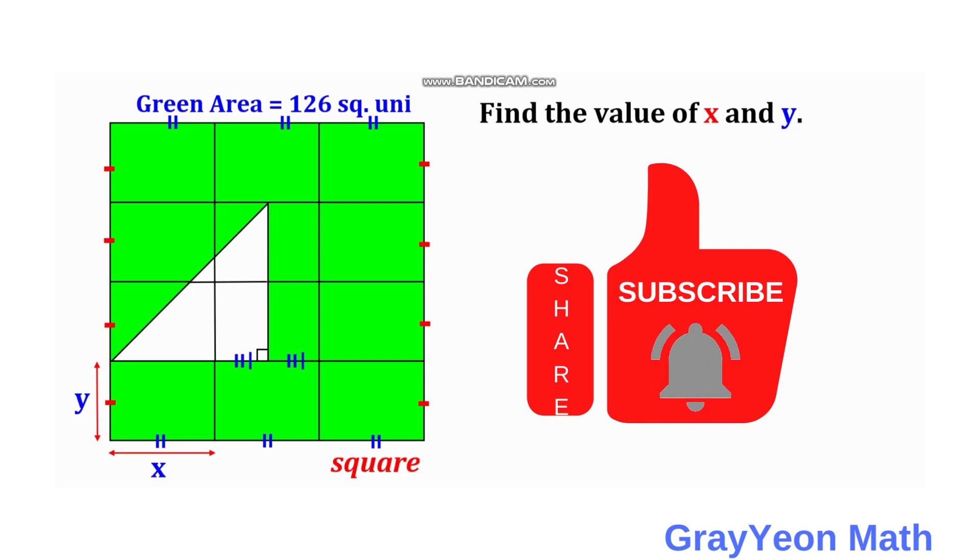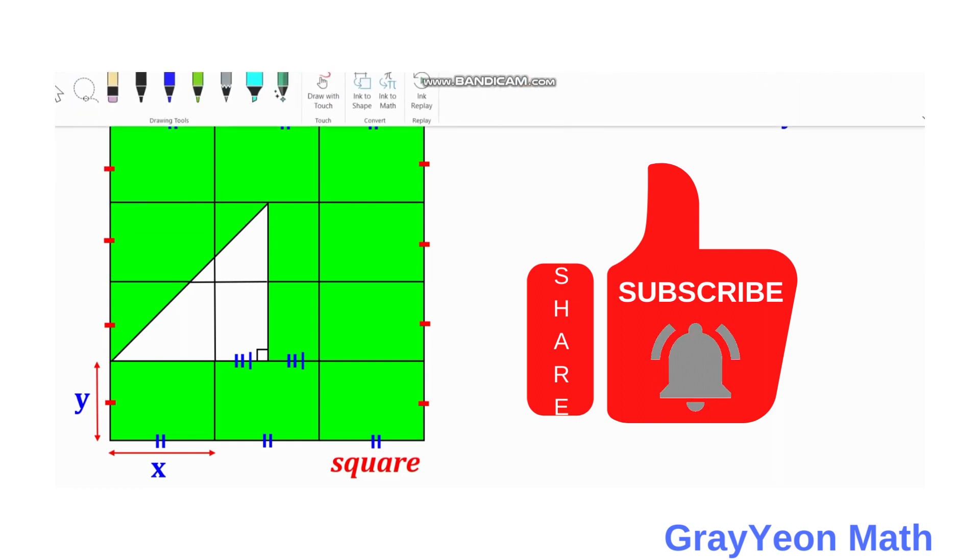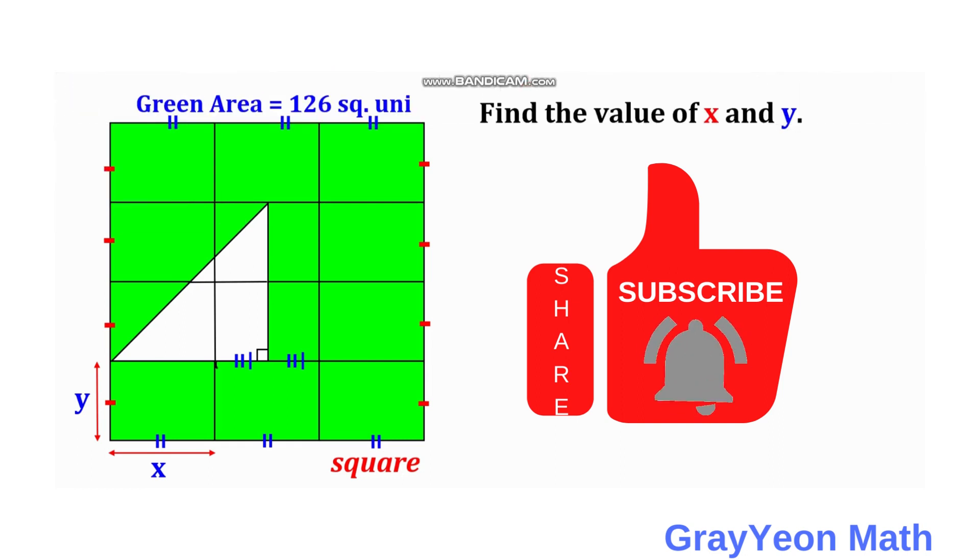This triangle is situated so that the vertical leg is at the middle of the square. As you can see, this portion is congruent or the same length. We are required to find the value of x and y.